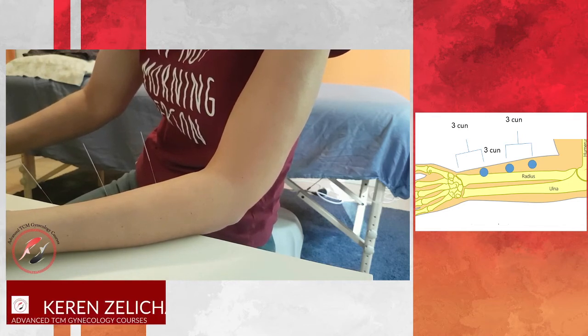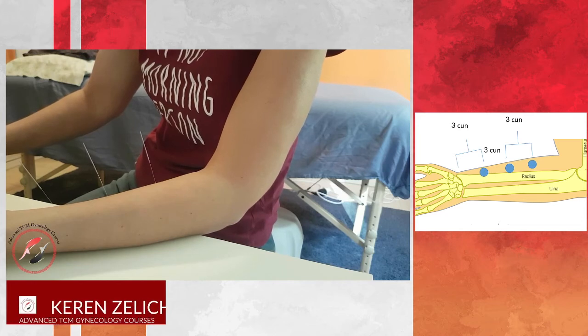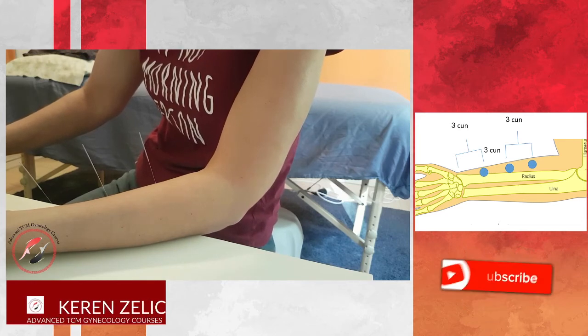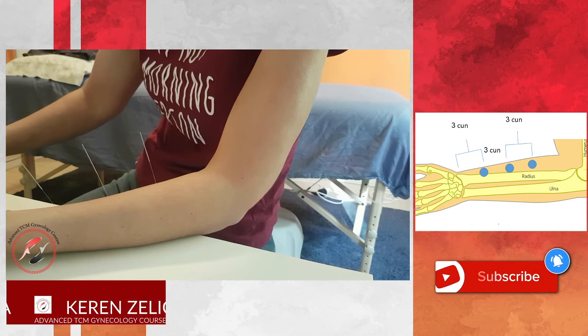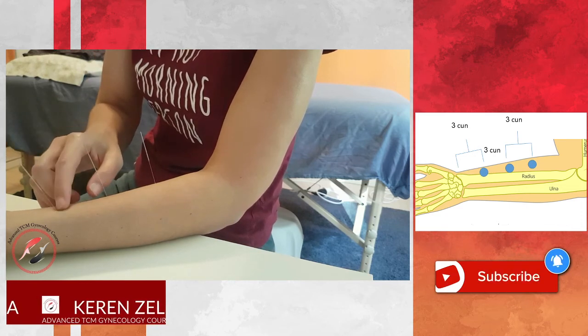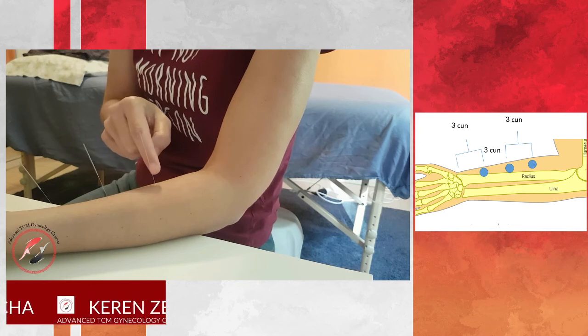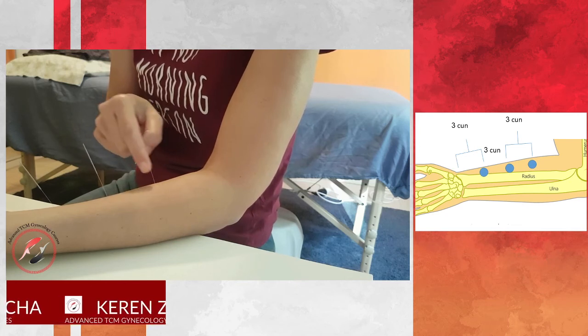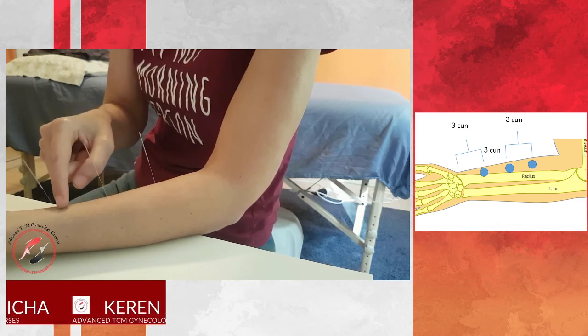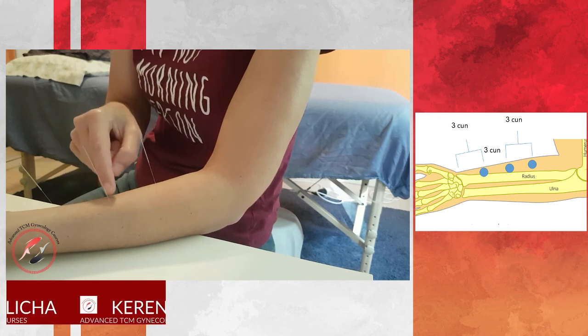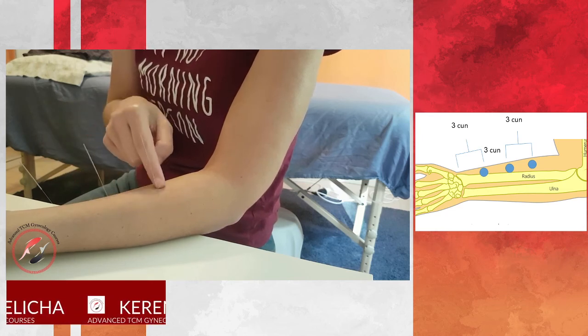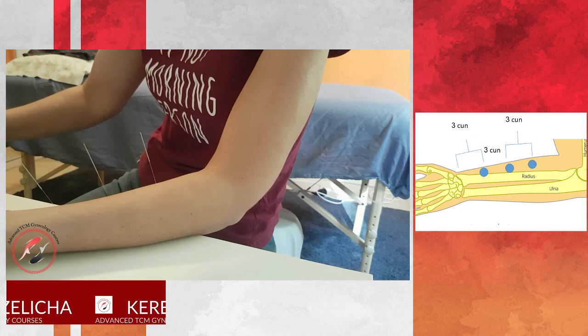So those are the scholars, or I would say also the name are the guard - human guard, earth guard, and heaven guard. Those are the points.